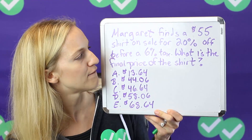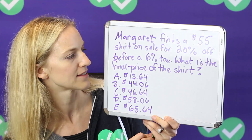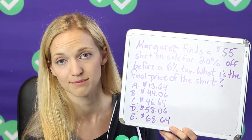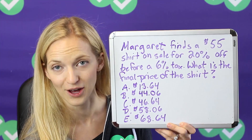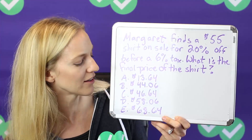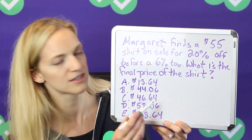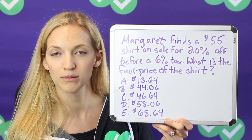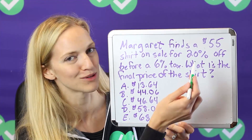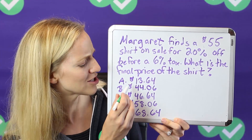Margaret finds a $55 shirt on sale for 20% off before a 6% tax. What is the final price of the shirt? Maybe you don't know how to actually solve this, but let's take a look at the answer choices. Answer choice A is $13.64. A lot of you have probably been to the mall — that would be a really good sale for a $55 shirt, not a 20% off kind of sale with tax on top. So that is just really unrealistic.